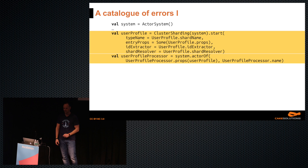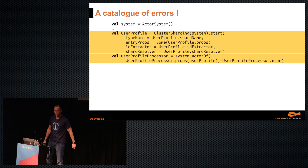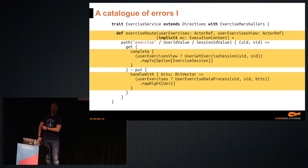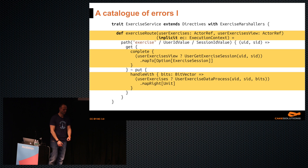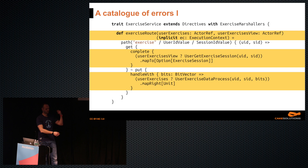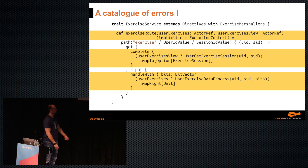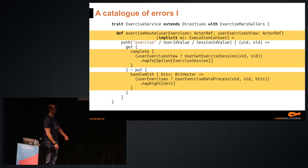Typical Akka cluster sharding setup backed by a Cassandra journal. To set up a user profile and user profile processor, all I had to do was create a cluster shard and Akka took care of distributing it across all nodes and routing messages. The REST API in Spray or Akka HTTP is readable even if you've done Ruby on Rails — it handles HTTP requests using user exercises and user exercises view as actors.